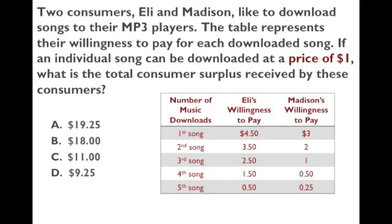If the price is $1, Eli will buy the first song because he's willing to pay $4.50. He buys the second because he's willing to pay $3.50, the third because he's willing to pay $2.50, and the fourth because he's willing to pay $1.50. He won't buy the fifth because he's only willing to pay $0.50 for it and it costs $1.